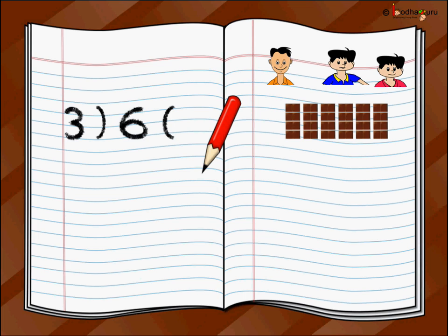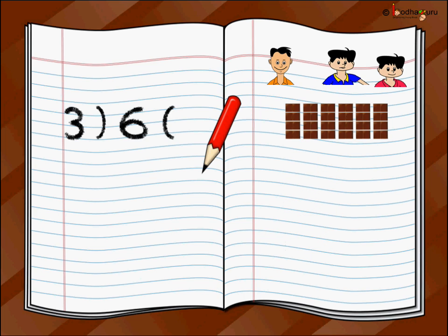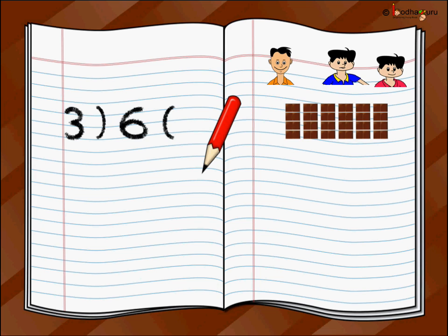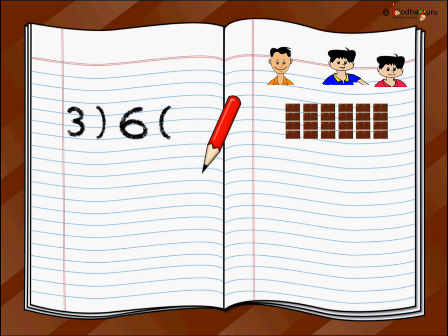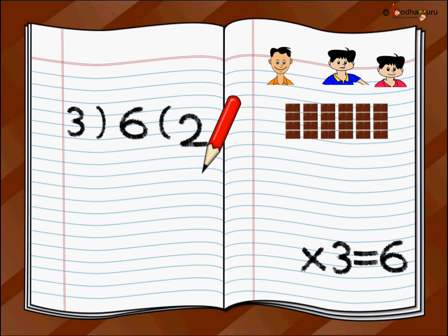We can use the multiplication table of three to know this. As we are dividing six, we shall count until we reach six. So let's use the multiplication table: one three's are three, two three's are six. So here we stop because we reach six. The result is two, and we write this number two after the right bracket.